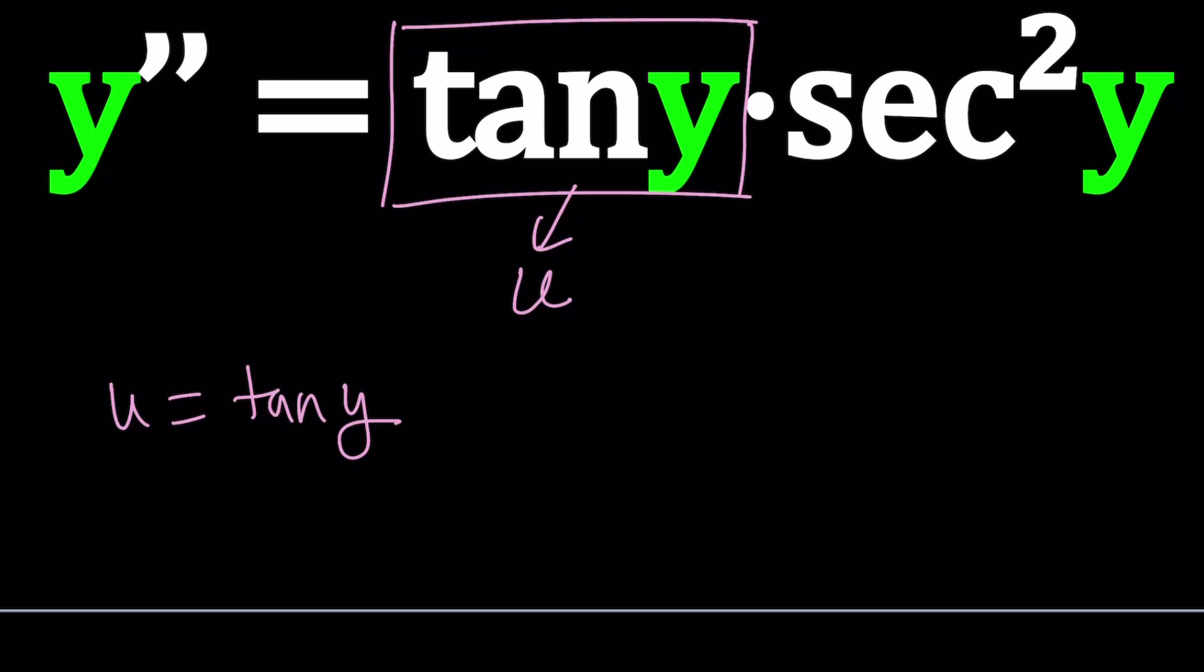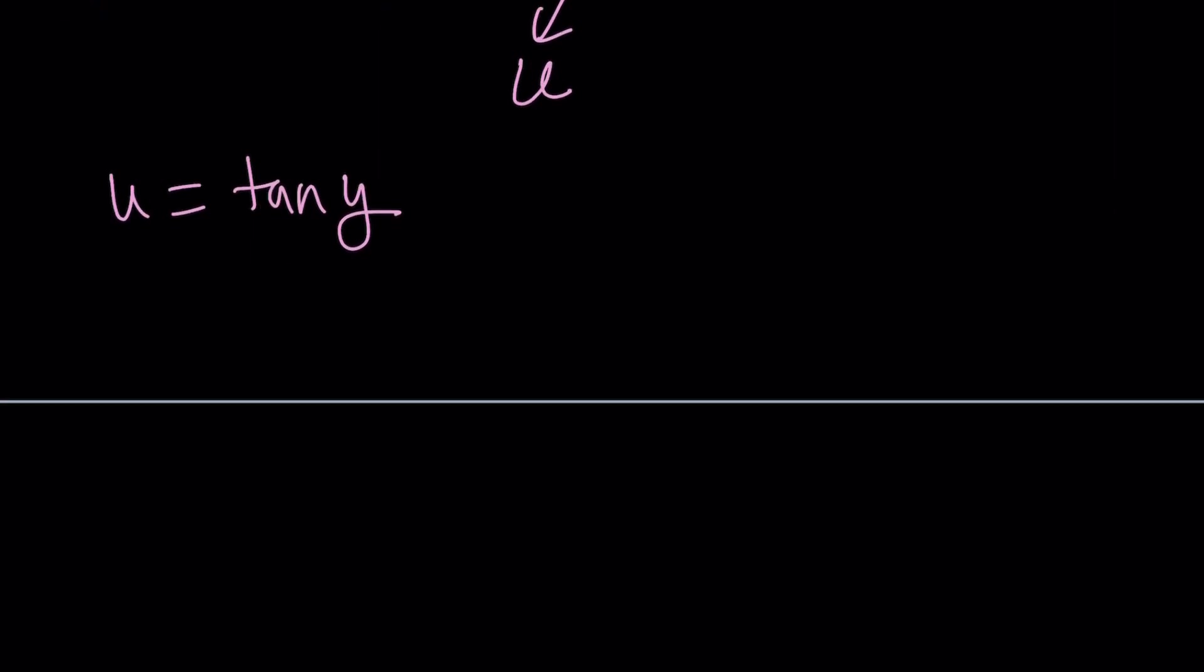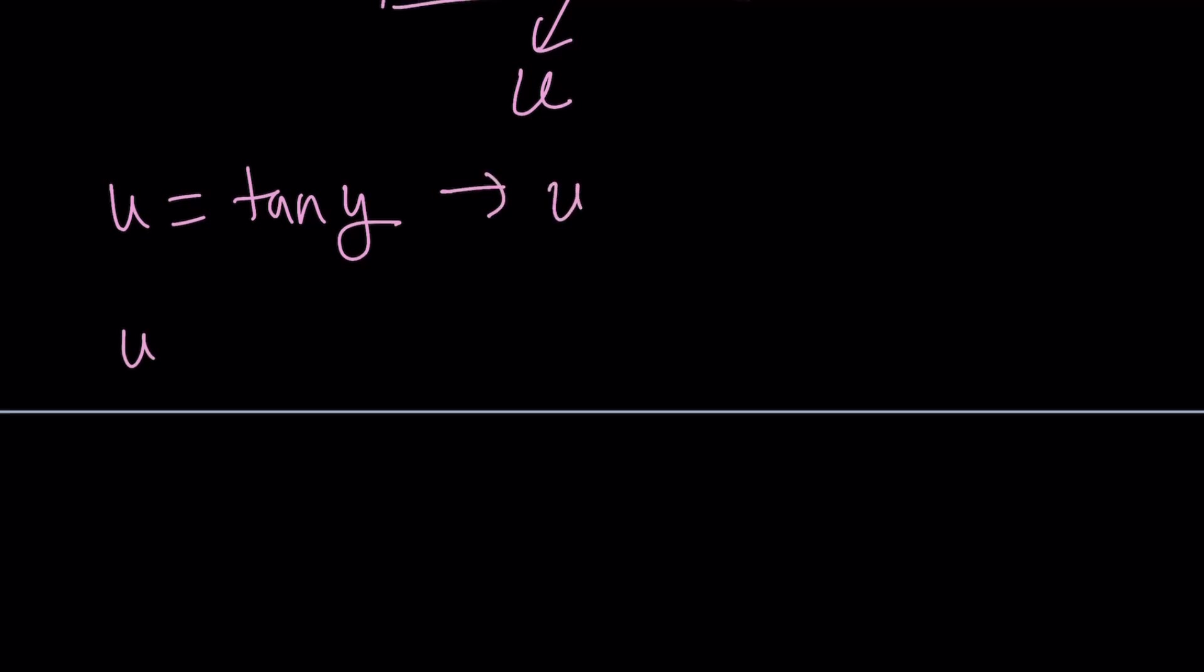But after calling this u, we can think about the derivative of u, which is going to give us a first derivative, which is good. So from here, u prime is going to be, you have to be careful because y is a function of x, so we have to use the chain rule. The derivative of tangent is secant squared. Then I have to multiply by y prime. Make sense? If this was an x, tangent x, the derivative of x would be 1, so we would not write it.